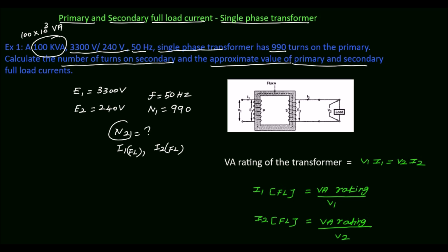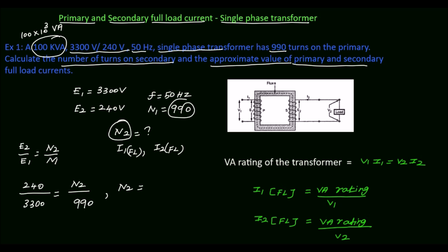First, we will find the number of turns on the secondary. We know that E2 divided by E1 is equal to N2 divided by N1. E2 is 240 and E1 is 3300, and N1 is 990. From this, N2 is equal to 240 into 990 divided by 3300, which equals 72. So the number of turns on the secondary N2 is equal to 72.